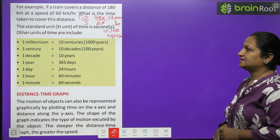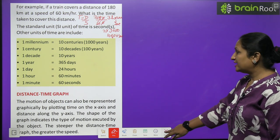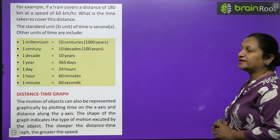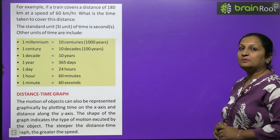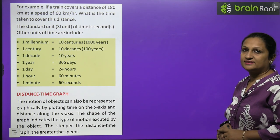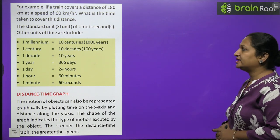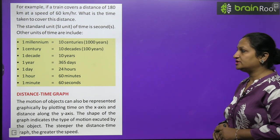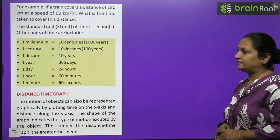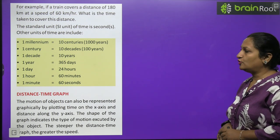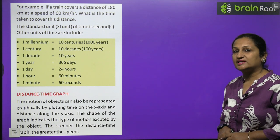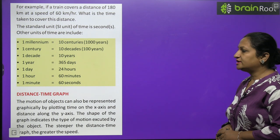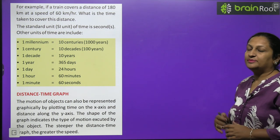The SI unit of time is seconds. Other units of time: 1 millennium equals 10 centuries, meaning 1000 years. 1 century equals 10 decades, which equals 100 years. 1 decade equals 10 years. 1 year equals 365 days. 1 day equals 24 hours. 1 hour equals 60 minutes. 1 minute equals 60 seconds.